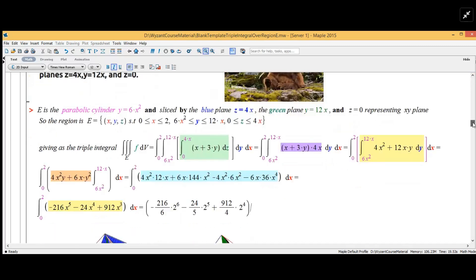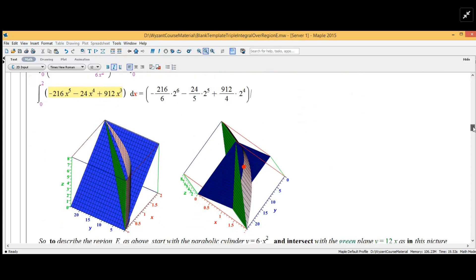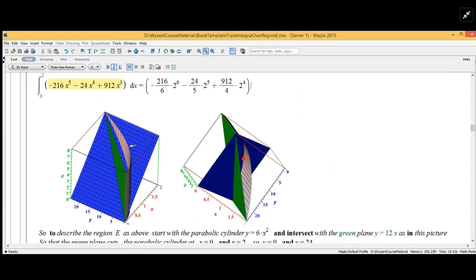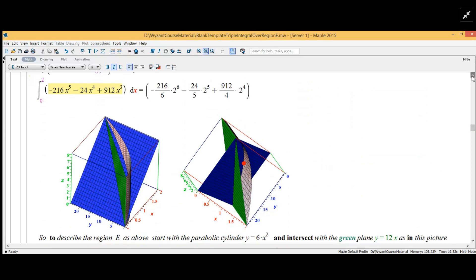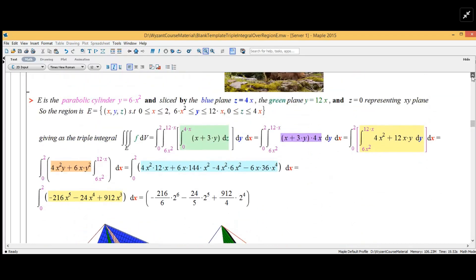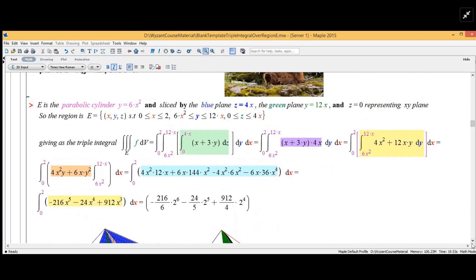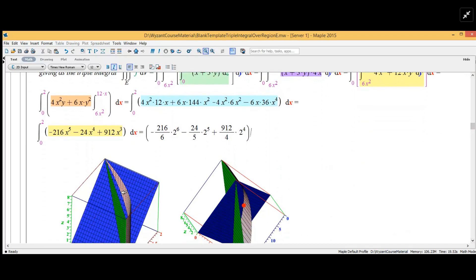Now let's look at the picture of this region. We have the parabolic cylinder here, the green plane slicing with the blue plane. The green plane is y equals 12x and the blue plane is z equals 4x.